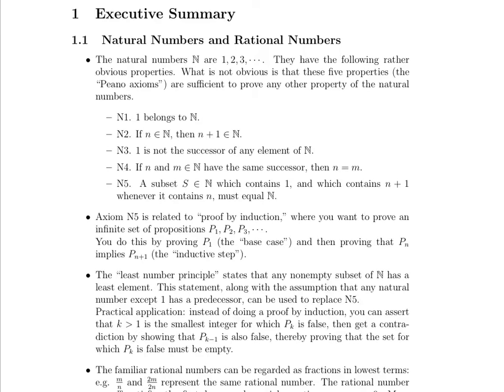First, consider the natural numbers. The natural numbers are the positive integers, strictly greater than 0, starting at 1, 2, 3, and so on and so forth. They have the following, as Paul writes here, pretty obvious properties. What's not obvious is that these 5 properties are sufficient to prove any other property that the natural numbers have.